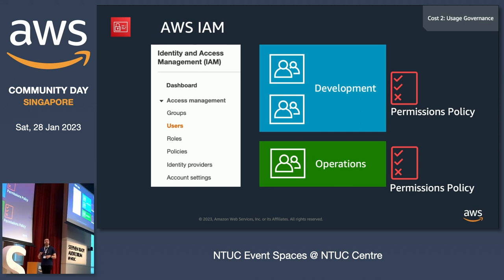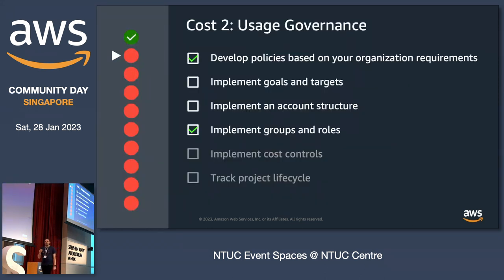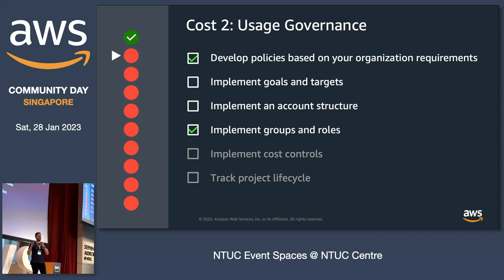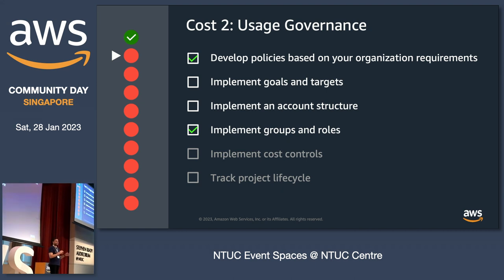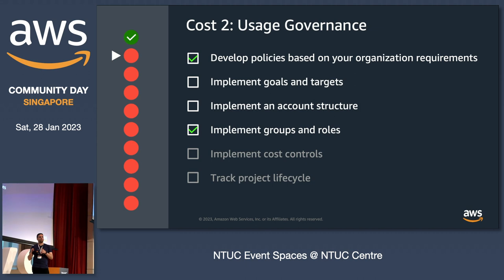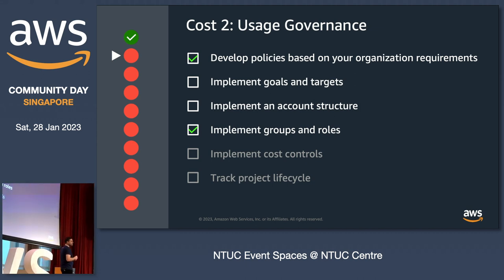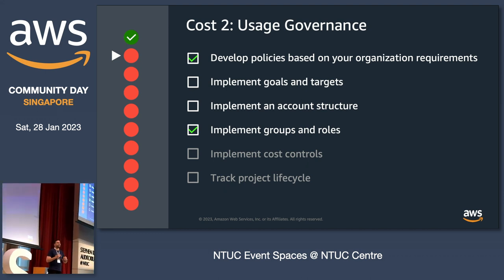Instead of letting users create whatever they'd like, you restrict their permissions. You can also restrict certain regions from having resources created in them — because over time, if users create resources in unused regions, you might end up being charged for costs you're not even aware of. Then you need to implement goals and targets. In your cost optimization team meetings, there should be goals and targets for every workload — for example, increasing business consumption by 20% while only increasing cost by 5%.